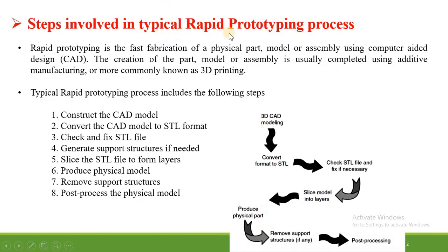Rapid prototyping is the fast fabrication of a physical part, model, or assembly using computer-aided design. In rapid prototyping we use CAD software for the development of a physical part, model, or assembly. The creation is usually completed using additive manufacturing, more commonly known as 3D printing, where a layer by layer approach is used to construct the 3D object.